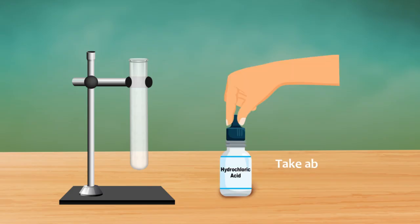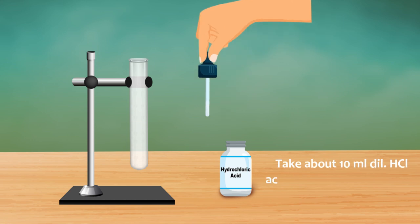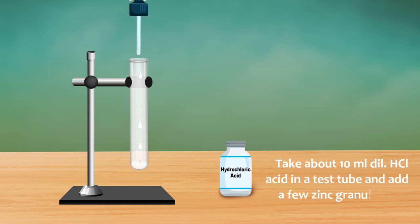Procedure. Take about 10 ml dilute hydrochloric acid in a test tube and add a few zinc granules to it.